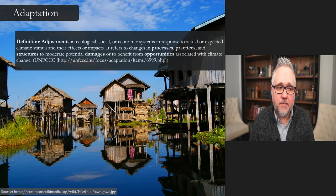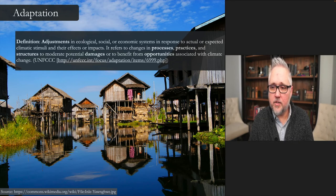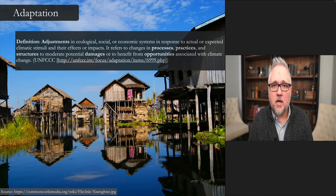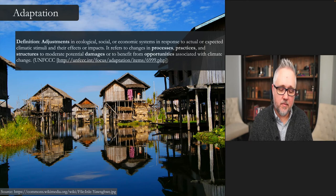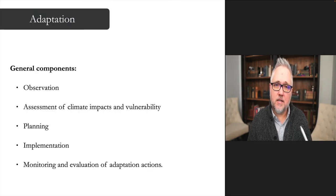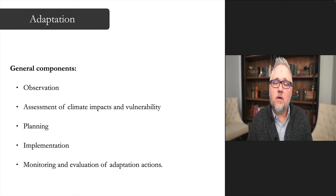The next element is adaptation. The UN definition: adjustments in ecological, social, or economic systems in response to actual or expected climate stimuli and their effects or impacts. It refers to changes in processes, practices, and structures to moderate potential damages or to benefit from opportunities associated with climate change. This is more about the fact that you can't always change what's coming, but you can try to adapt — finding the nearest lifeboat, steering the ship away. That process usually has a life cycle: observing what's likely to happen, assessing your vulnerability and risk tolerance, planning and implementing, and then monitoring and evaluating whether your actions are effective.